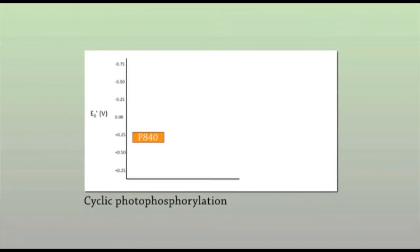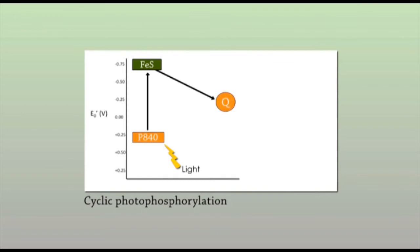In green bacteria, the P840 reaction center absorbs light energy and becomes excited. The excited electron is released and used to reduce an iron-sulfur protein, leaving an oxidized reaction center. The electron is transferred to a quinone, then to a series of cytochromes, which in turn reduces the P840 reaction center — the process is cyclical. The grey arrow from the iron-sulfur protein to ferredoxin represents an alternative pathway the electron can take, which is non-cyclic photophosphorylation.